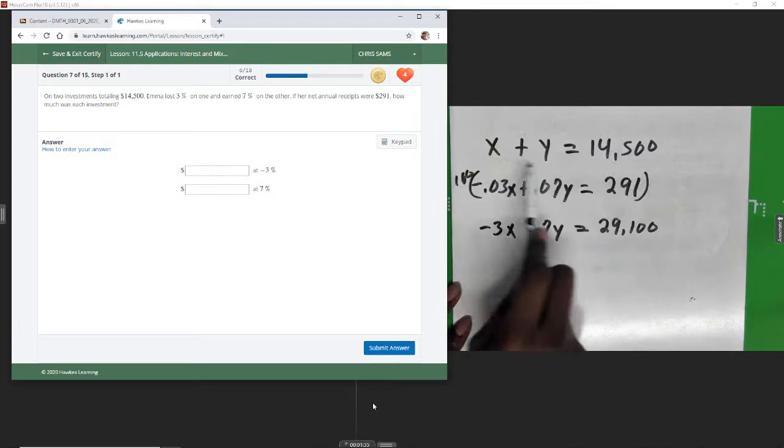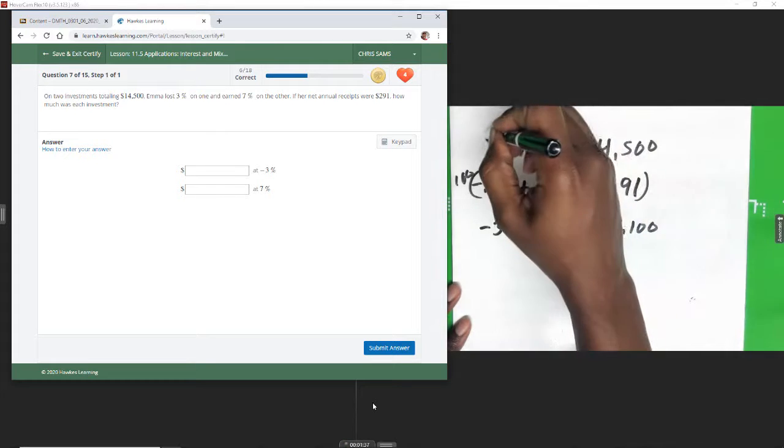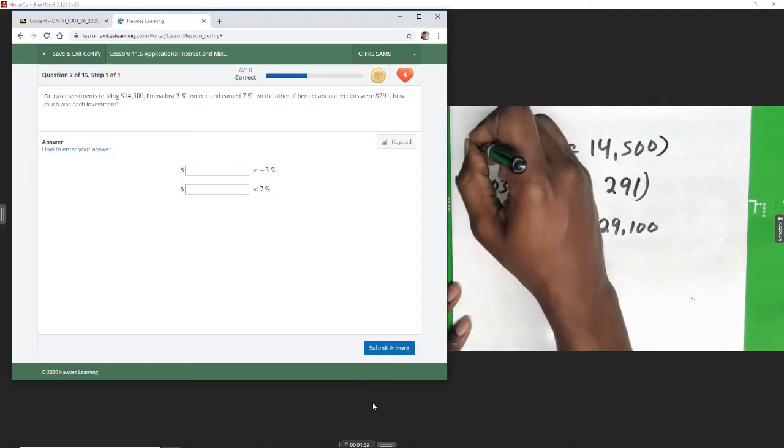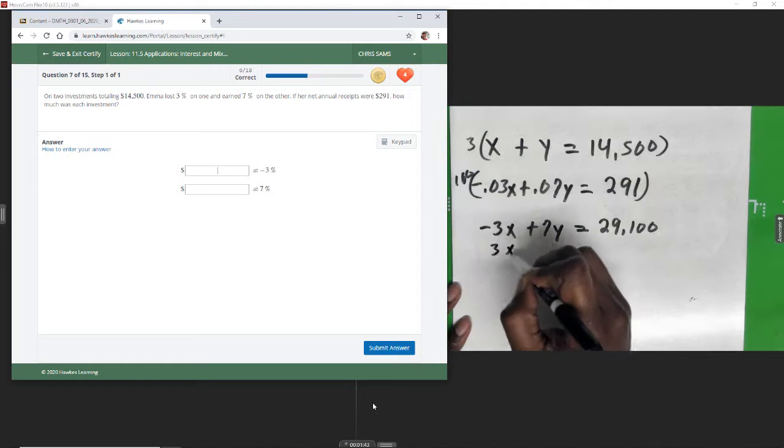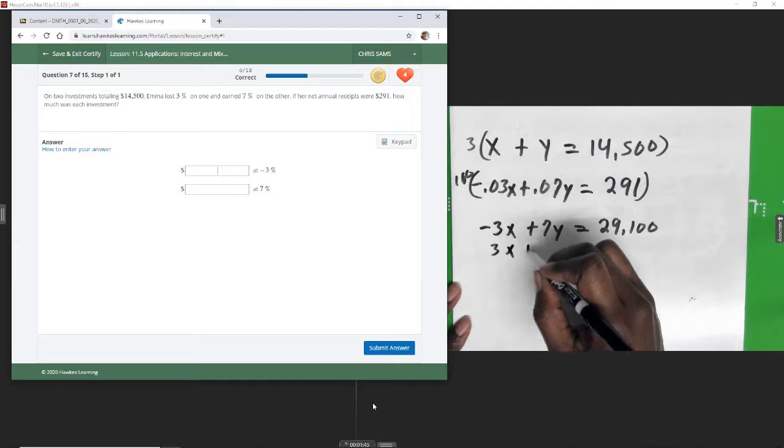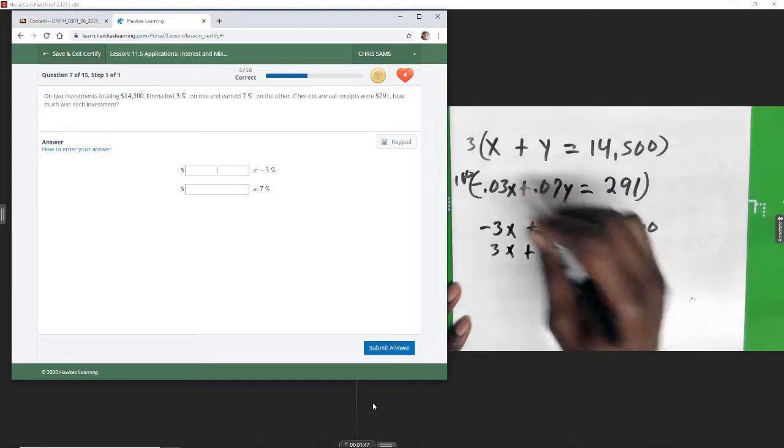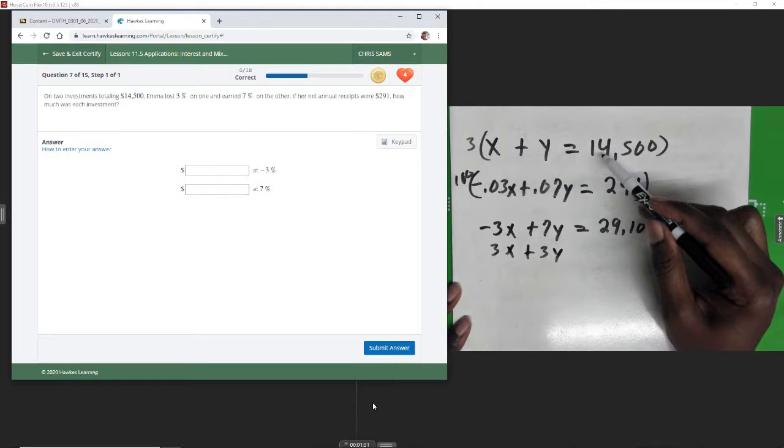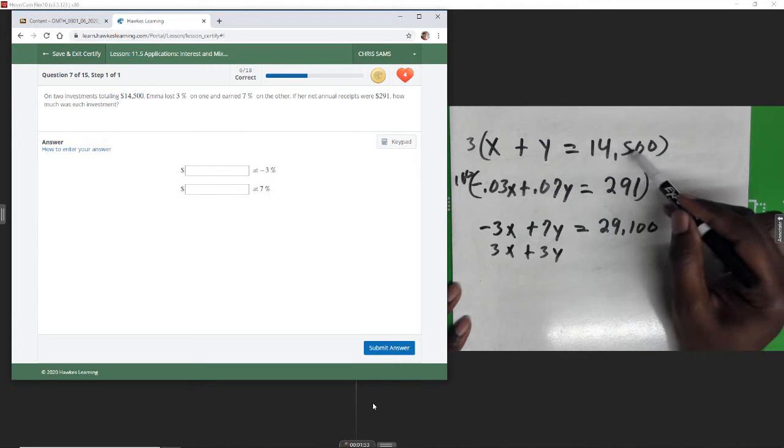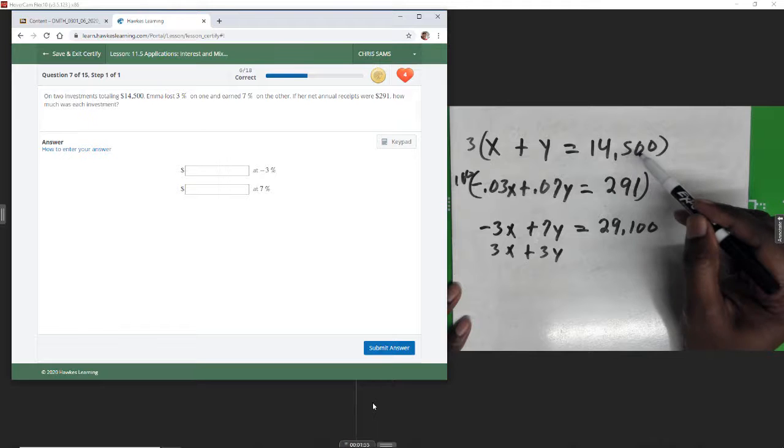Alright, and then since x is already negative, they already have opposite signs, I will eliminate x by multiplying this equation by 3 so that x is the same. So multiply by 3 here, that will give us 3x plus 3y, and then three times fourteen gives us forty-two, carry one, $43,500.